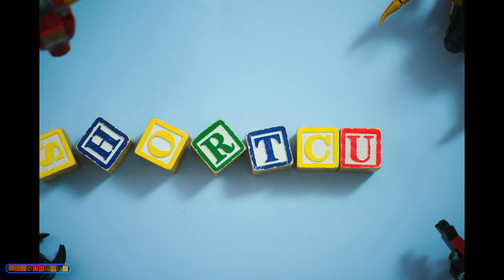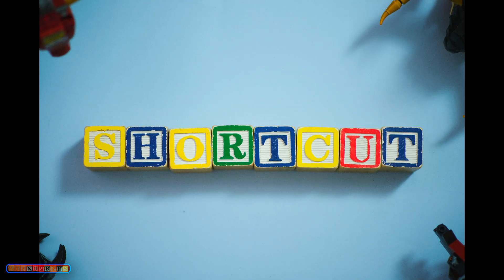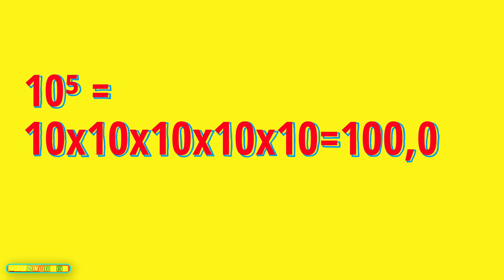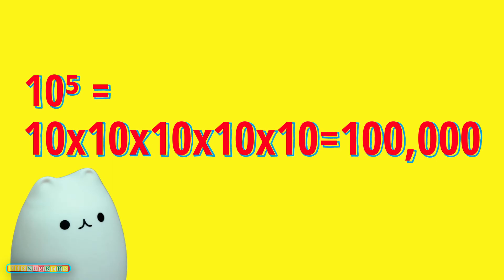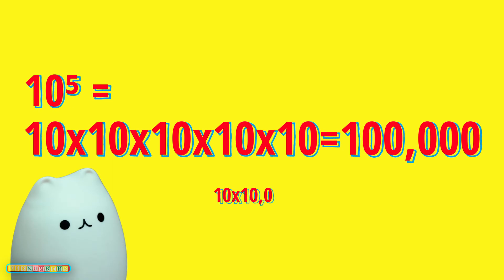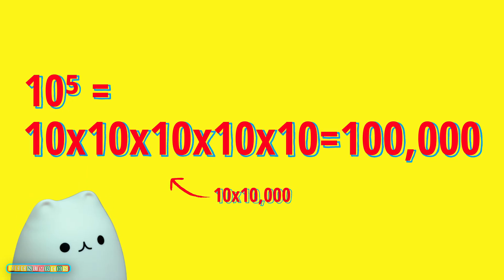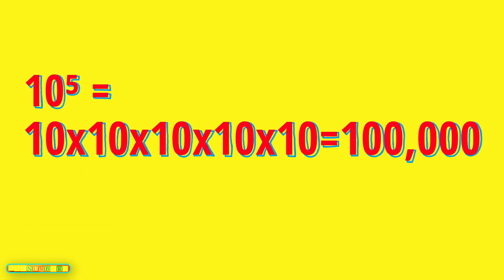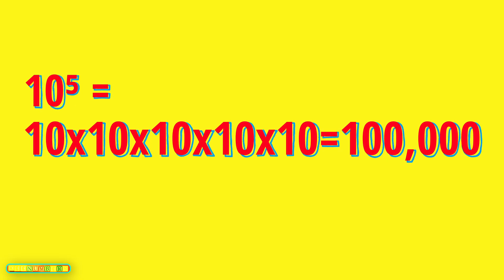Notice a shortcut? 10 to the 5th power? That would just be 10 times 10 times 10 times 10 times 10, or 10 times 10,000, which is just 100,000 — 1 followed by 5 zeros.